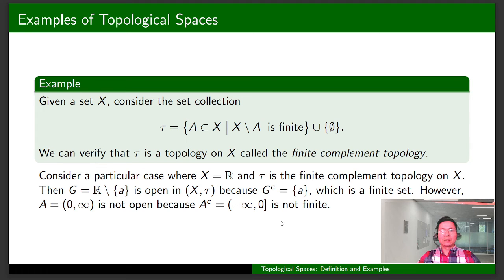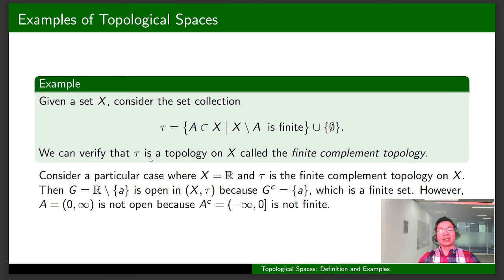Finally, we are going to talk about another topology structure. Given a set X, consider the collection of subsets of X defined as follows: τ contains all subsets of X such that its complement is finite, along with the empty set. In the next video, we are going to prove that τ is a topology on X and it is called the finite complement topology.